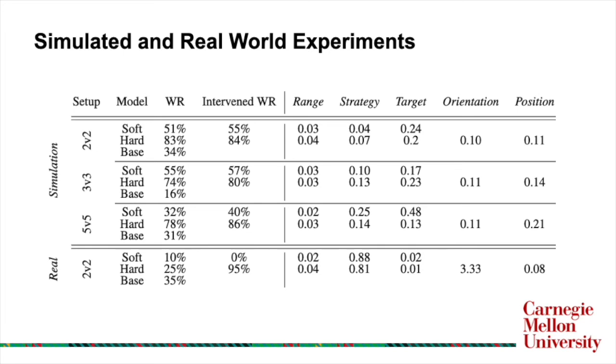Other than the hard model performing pretty much always better than the soft and the soft better than the base, we can also see here that interventions, in the case of the soft and hard models, almost always provide a better win rate. The only exception is in the soft model in the real world, and we hypothesize this is due to whatever instability is being caused is not due to the concepts that we're updating, and therefore the sim to real instability still exists for the soft, whereas we fixed it in the hard case, since the hard has more concepts.